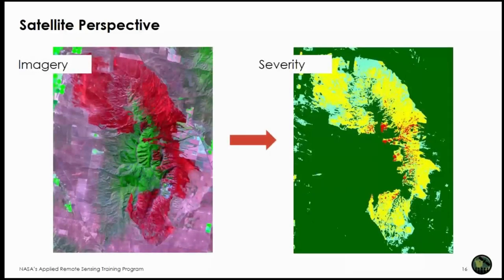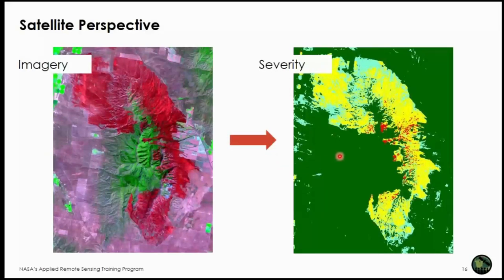From a satellite perspective, we can see burn severity. On the left you can see a Landsat image showing a recent fire scar crossing grasslands, shrub areas, and forested areas. We can directly correlate this with on-the-ground measurements to threshold the imagery and produce a burn severity map. In the burn severity map, dark green is unburned, mint green is low severity, yellow is moderate severity, and red is high severity.